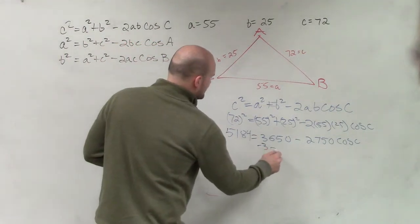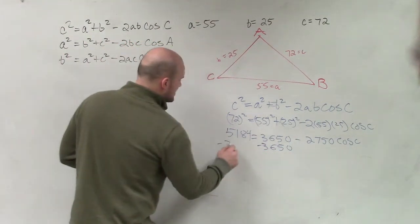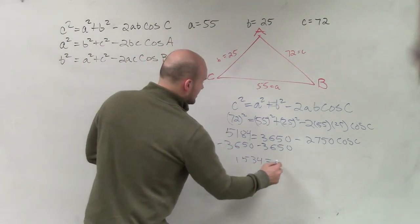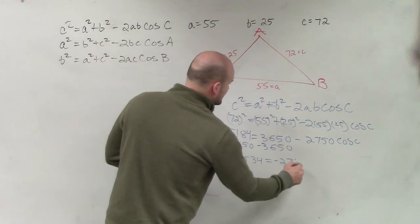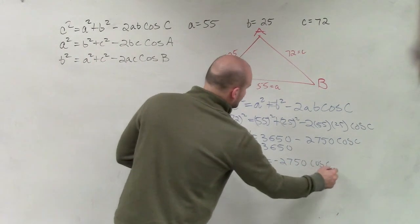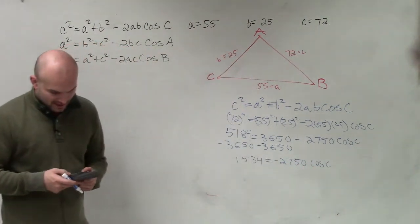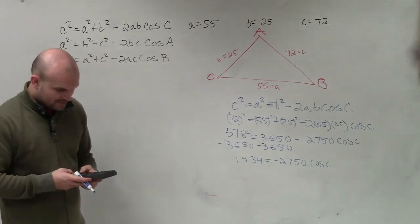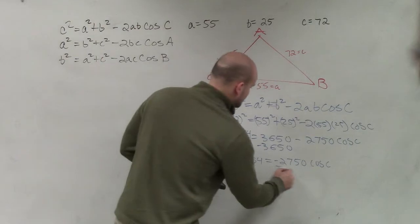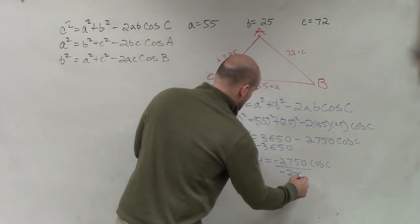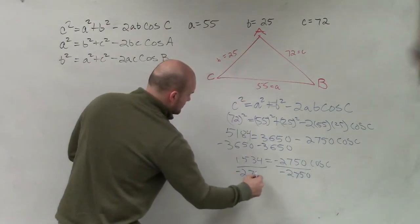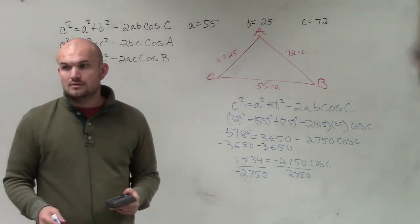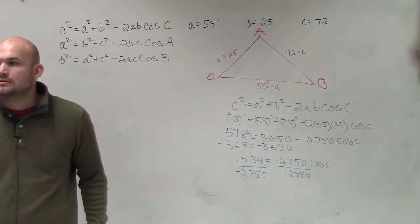Now I'll subtract 3,650 on both sides. And I get 1,534 equals negative 2,750 times the cosine of C. Then I divide by negative 2,750 on both sides.